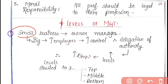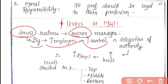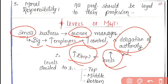In earlier times there was only small business, managed by the owner — in sole proprietorship or partnership businesses, owners used to manage the business. But as the business expanded, more employees were needed, and control over them required delegation of authority — giving your powers to others. As more levels are added, more people are needed, which increases expenses. To control these expenses, the levels of management are limited to three.